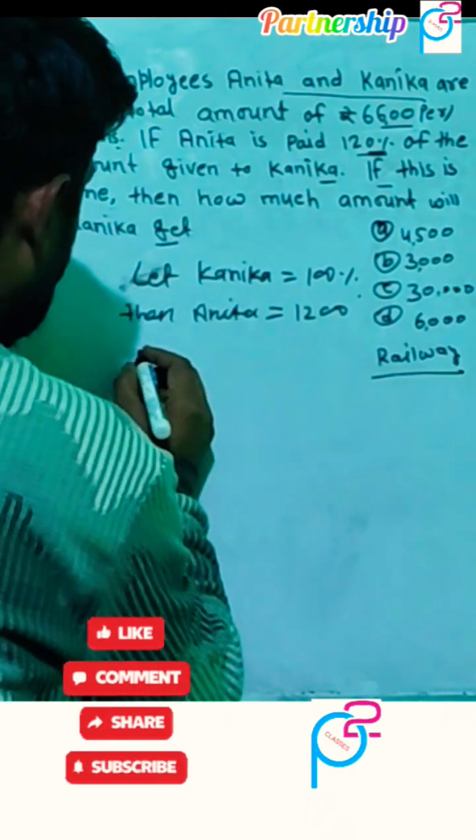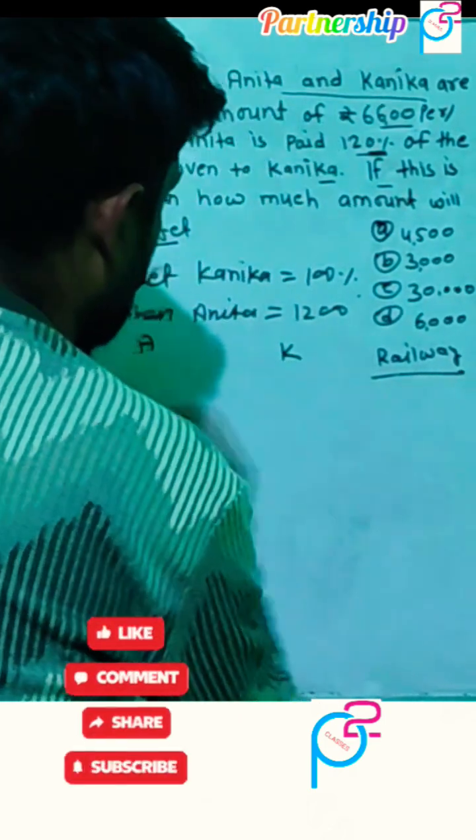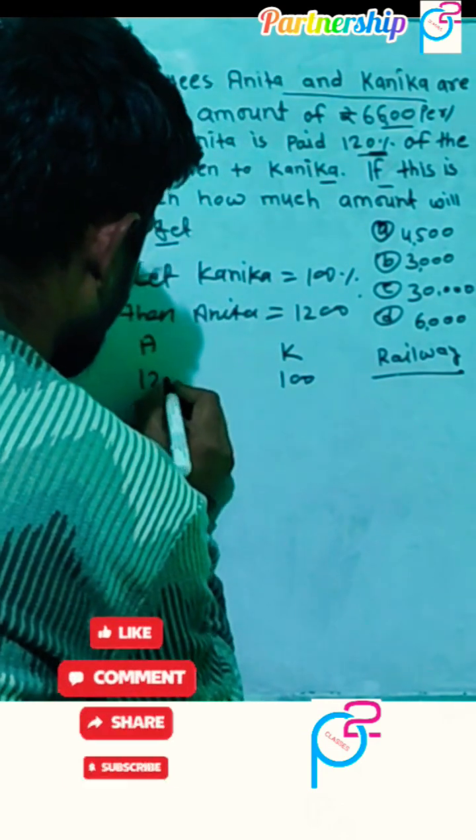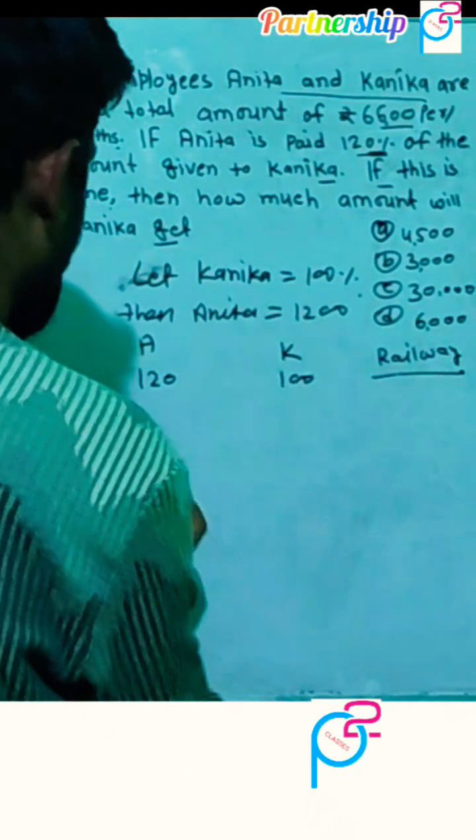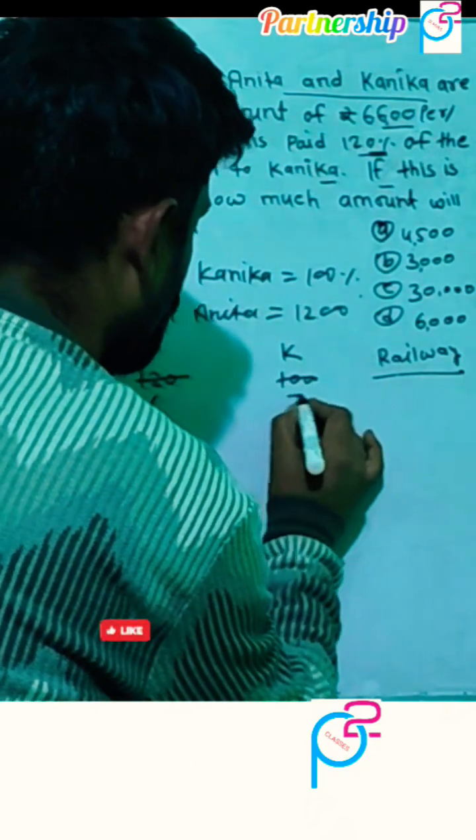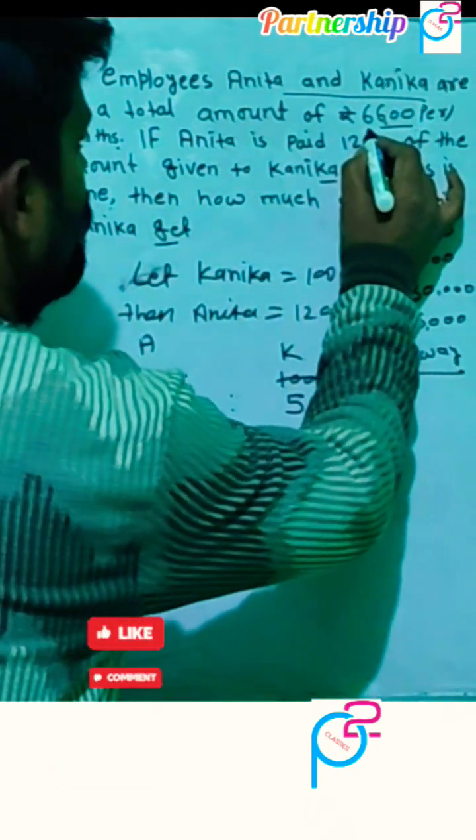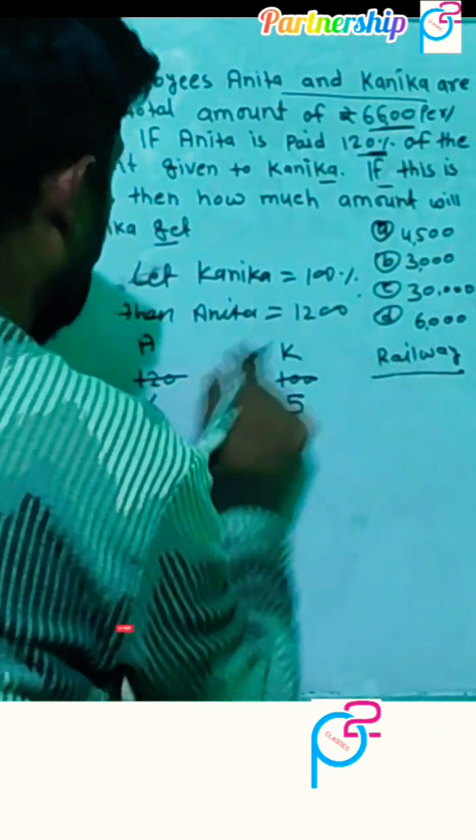you get the ratio of both, then you write here A for Anita and K for Kanika: 120 and 100. If you want to simplify it, that's 6 ratio 5. Then the amount here, 6600,